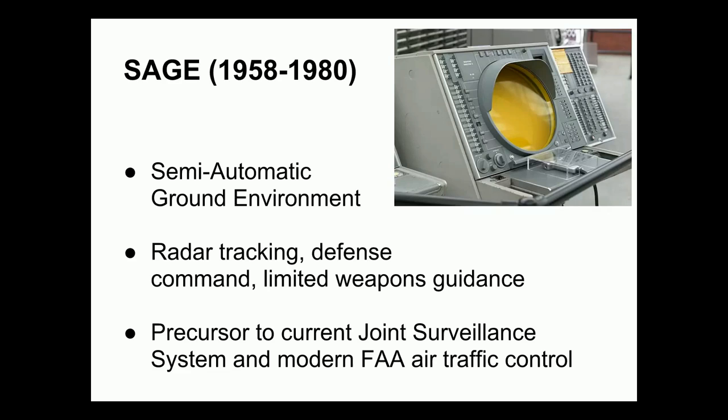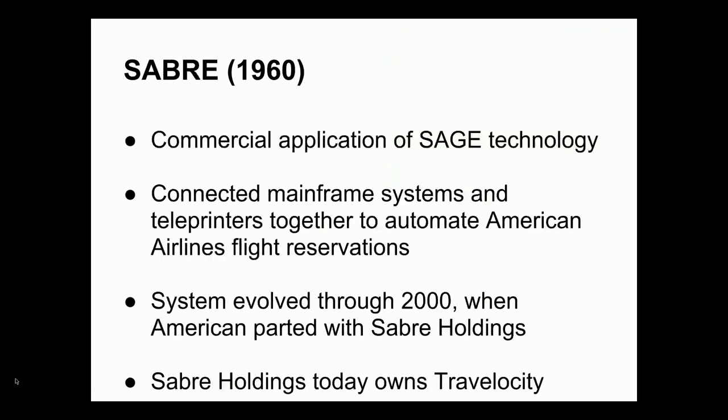SAGE was in operation until 1980, when it was replaced by the Joint Surveillance System and also became part of the modern FAA air traffic control system, eventually leading into civilian systems. Here is a radar terminal for SAGE — you can see quite a few analog switches and buttons, as well as what's called a light gun, a device that could be used for pointing to targets on the screen.